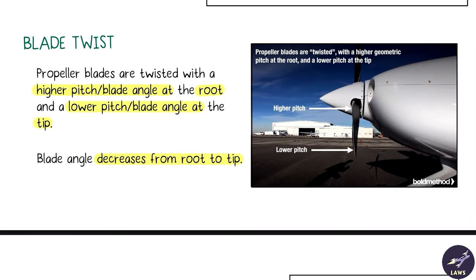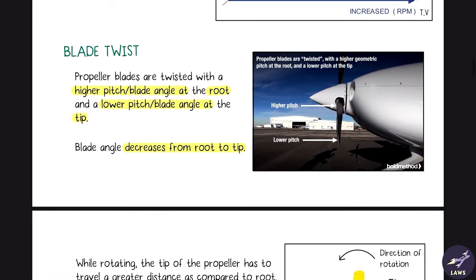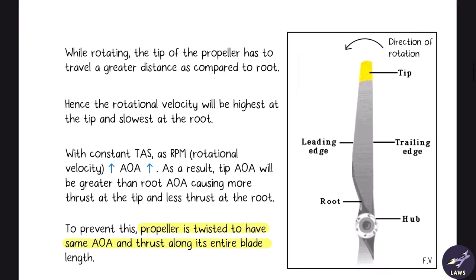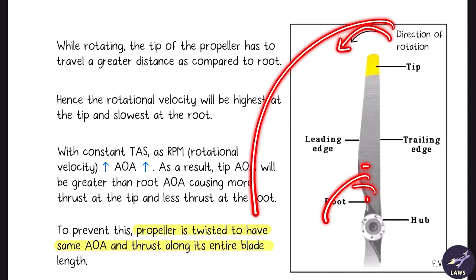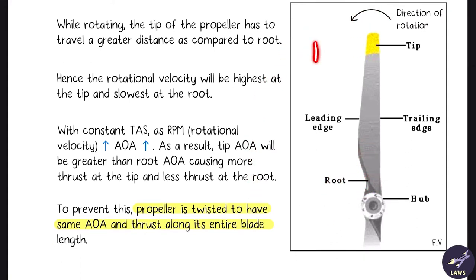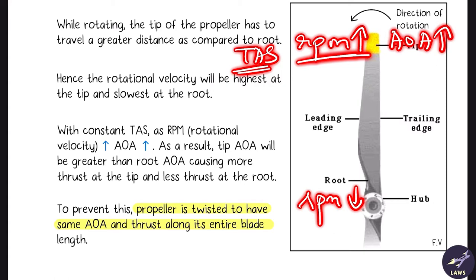Next is blade twist. Propeller blades are twisted with a higher pitch or blade angle at the root and a lower pitch or blade angle at the tip — so the blade angle decreases from root to tip. While rotating, the tip of the propeller has to cover a greater distance than the root, so the RPM at the tip is greater and at the root it is lesser.